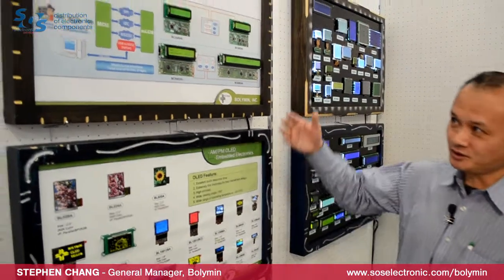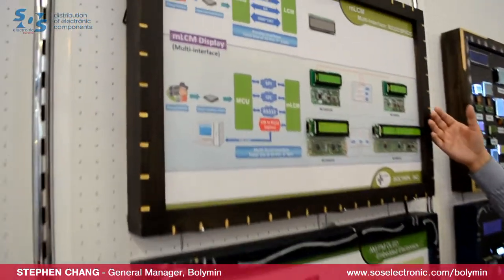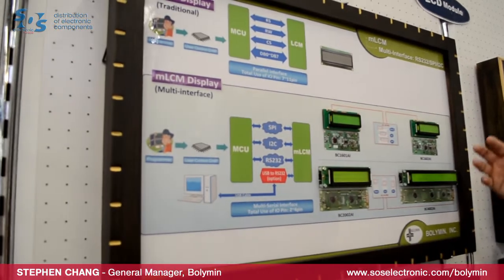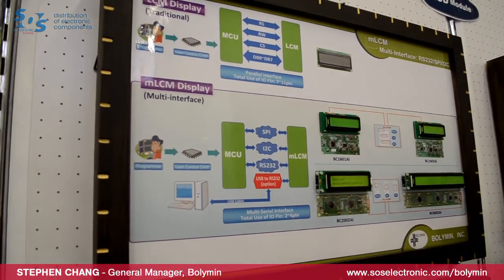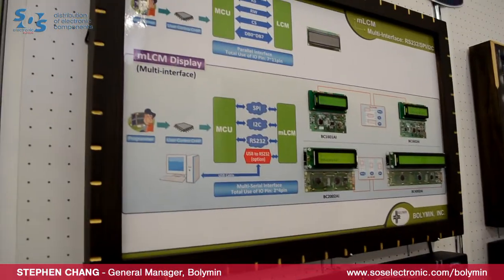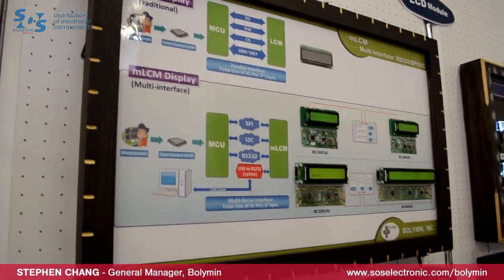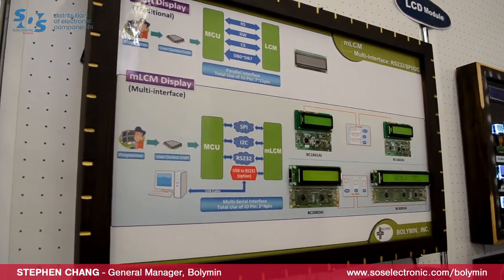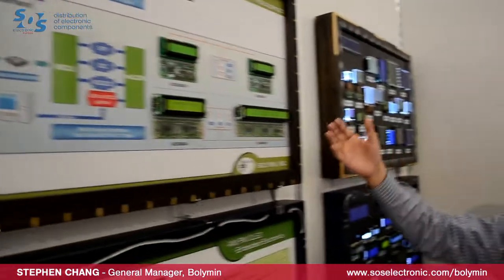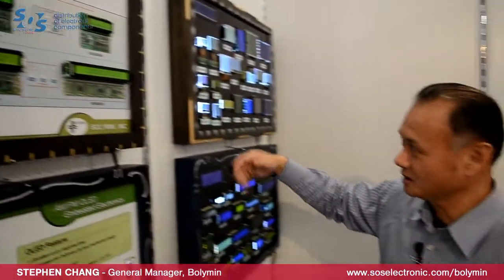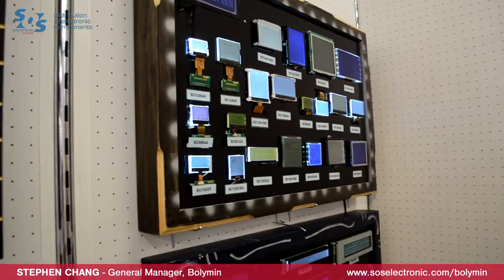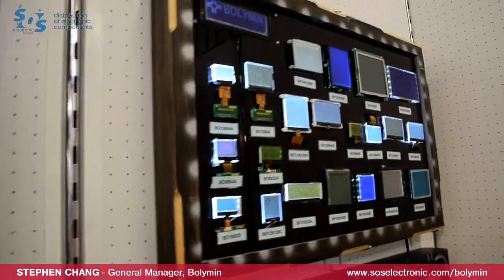Now we are in front of our display demo boxes. We have a traditional display module right here and also a multi-interface industrial LCD module right here. Those traditional LCD modules — we have a character type, graphic type — so many, probably over two or three hundred different standard ones.